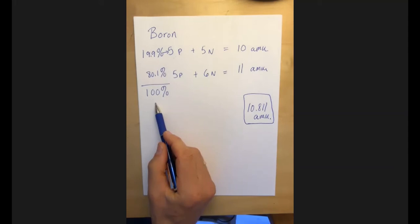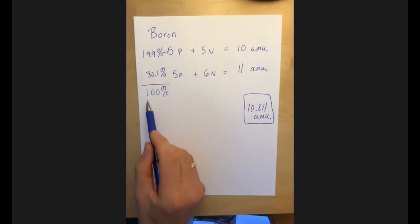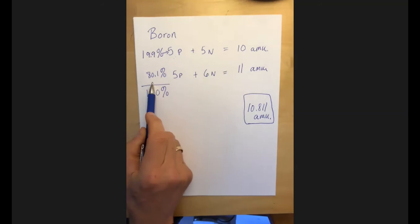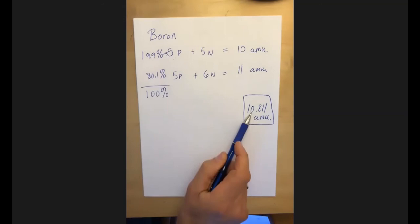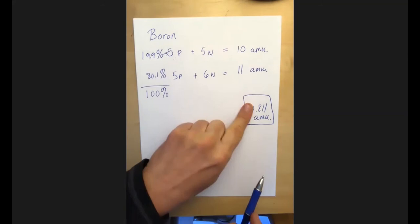And so you might be able to look at 80 and 20 and say, hey, look, 80% of the boron weighs 11. 20% of the boron weighs 10. And you might say, oh, well, this number is 80% of the way towards 11, right? There's the 0.81. That's 80% of the way towards the number 11.